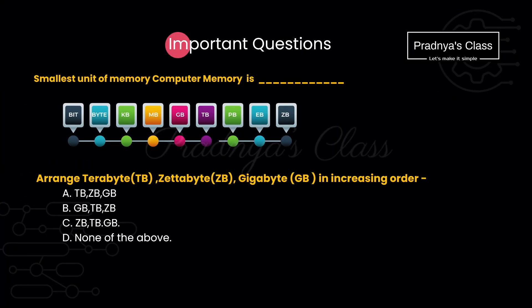Along with theory questions for two marks, you may also get one-mark questions as fill-in-the-blanks or MCQs. The smallest unit of computer memory is a bit. For arranging memory units in increasing order, from the given options the sequence is: gigabyte, then terabyte, followed by zettabyte — this corresponds to option B, which is the correct answer.